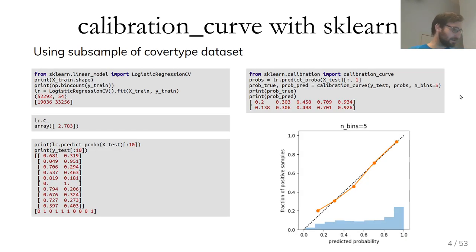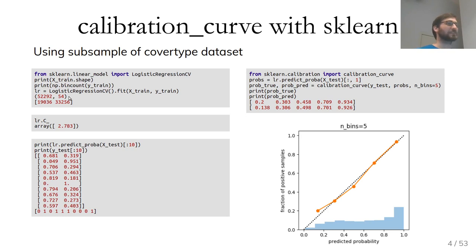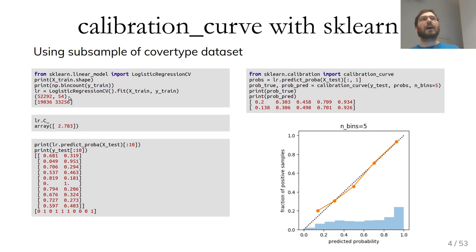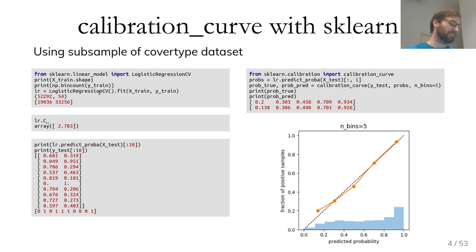Let's do this with a real dataset — the cover type dataset, a subsample of about 50,000 data points in 54 dimensions. We train a logistic regression model. We know logistic regression can make probabilistic predictions, and now our question is: are the probabilities it estimates actually meaningful? I fit logistic regression CV, which automatically adjusts the parameter C. The data is already scaled.